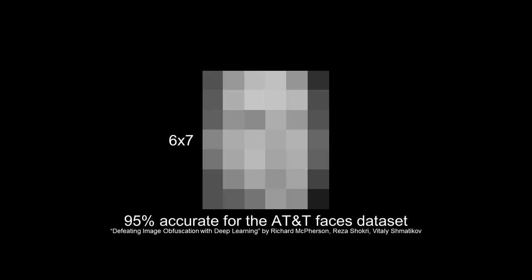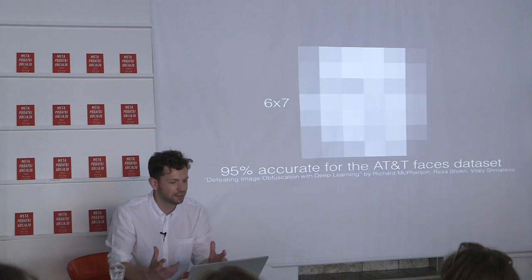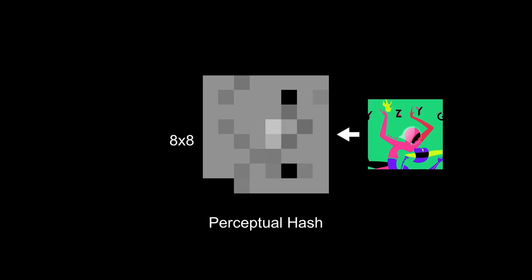That's enough information to do facial recognition on every person in this room right now. According to a research report from last year, you only need 6x7 pixels to do facial recognition on a data set of about 40 to 50 people — and if those people look very different, you could do it on a greater number. At 8x8, you can create a search engine for images: take your 8-megapixel iPhone capture, reduce it to 8x8 pixels, and use that as a query and unique signature. This is one way people search for copyright infringement — by reducing an image to 8 pixels and searching for anything similar.